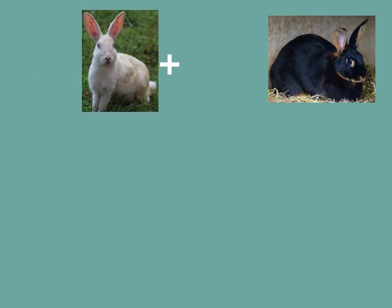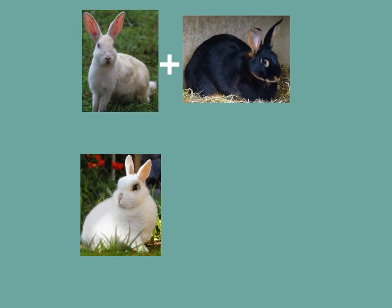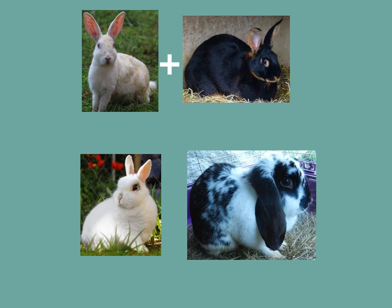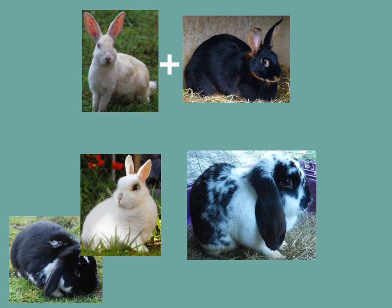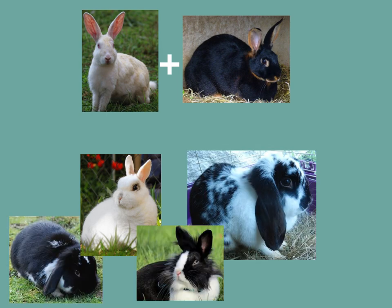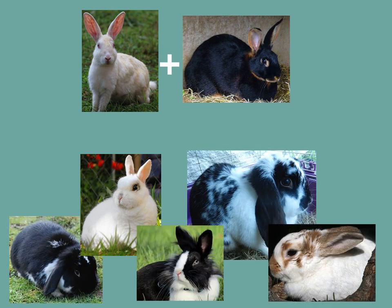With sexual reproduction, the offspring looks similar but different from each other and their parents. This is because there are thousands of genes that code for different traits on an organism's chromosomes. Each time meiosis occurs, the alleles of the genes are randomly split. This is why you look similar to your brothers or sisters and yet you are different.